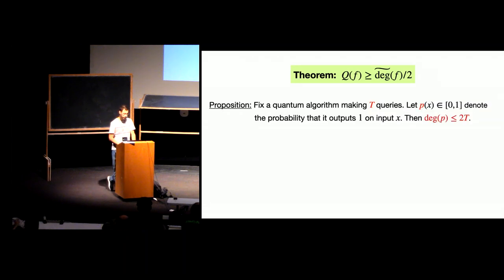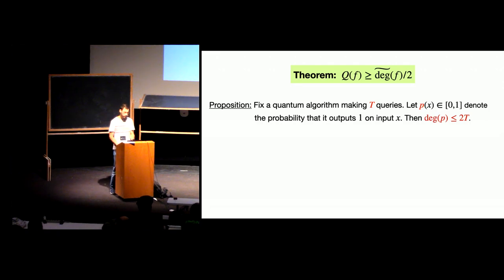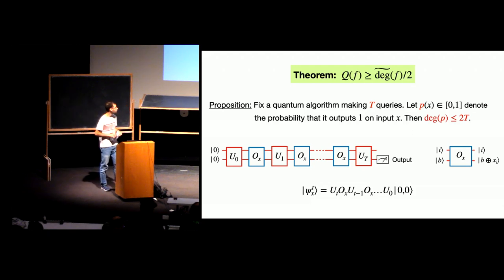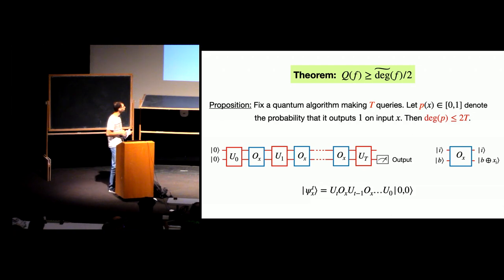The main result needed: if you fix any quantum algorithm making T queries, and let p(x) denote the probability it outputs 1 on input x, then the degree of p is at most 2T. To prove this, recall the quantum query model: a circuit alternating between unitary and oracle gates. We let psi_x^t denote the intermediate state after T queries, and prove the result by induction on T.